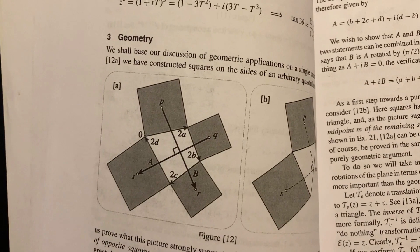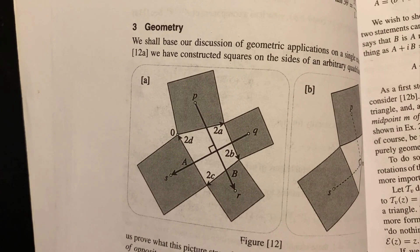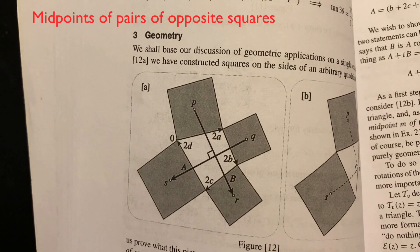Also in chapter one can be found a couple of applications of the geometry of complex addition and multiplication. The first of which includes this fact, that if you've got a quadrilateral and squares drawn on the sides of that quadrilateral and connect the midpoints of those squares with line segments, you get two line segments as in this picture that are perpendicular and of the same length.